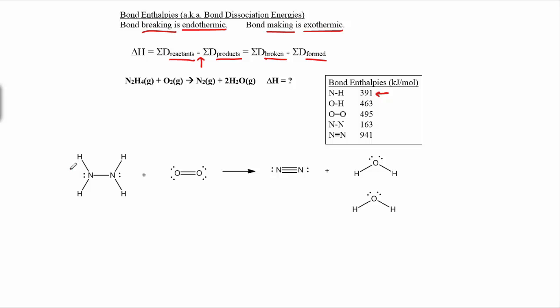We can see that on the reactant side here we've got these NH bonds that are going to get broken. In this case, we could just add them all in together - there's four of those, and it's going to cost 391 kilojoules per mole, so we'll multiply that by four.